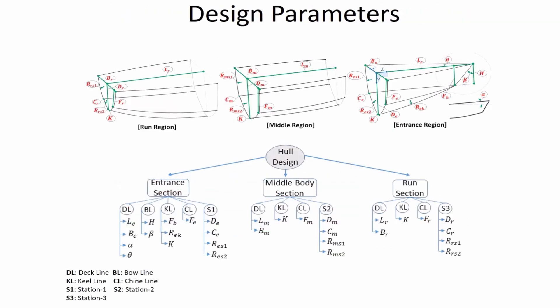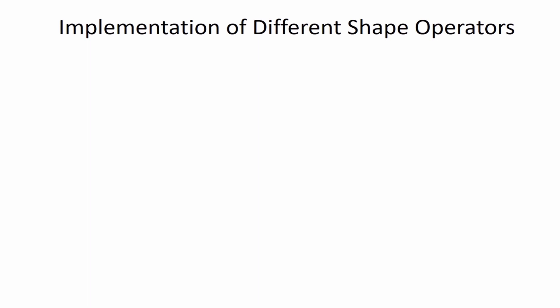Each region of the hull consists of independent design parameters. For example, LE is the length of the entrance region, LM is the length of the middle region, and LR is the length of the run region. For detailed descriptions, viewers should refer to the original article.